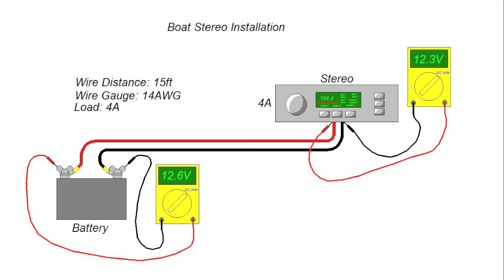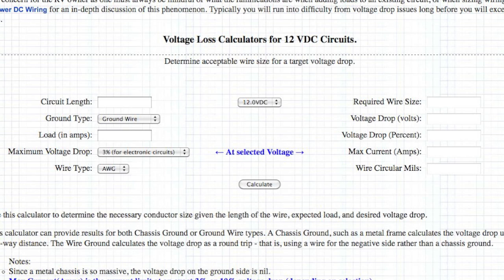In this example, we have an installation of a stereo in a boat, and of course, with a fiberglass boat, we have to run both the positive and the negative wires. You'll see here that at the battery, we have a 12.6 volt battery, and at the stereo, we have 12.3 volts. This is within a normal operating range of the stereo equipment, and we can verify this with our online voltage drop calculator.